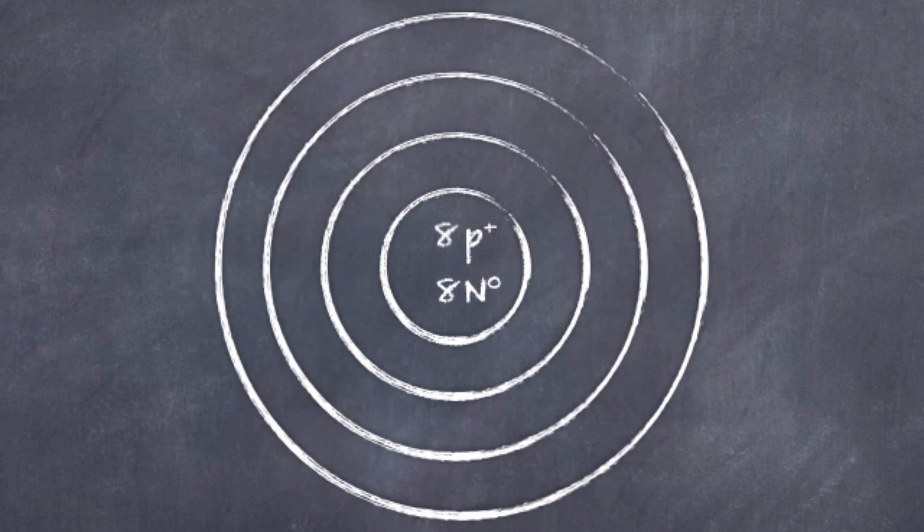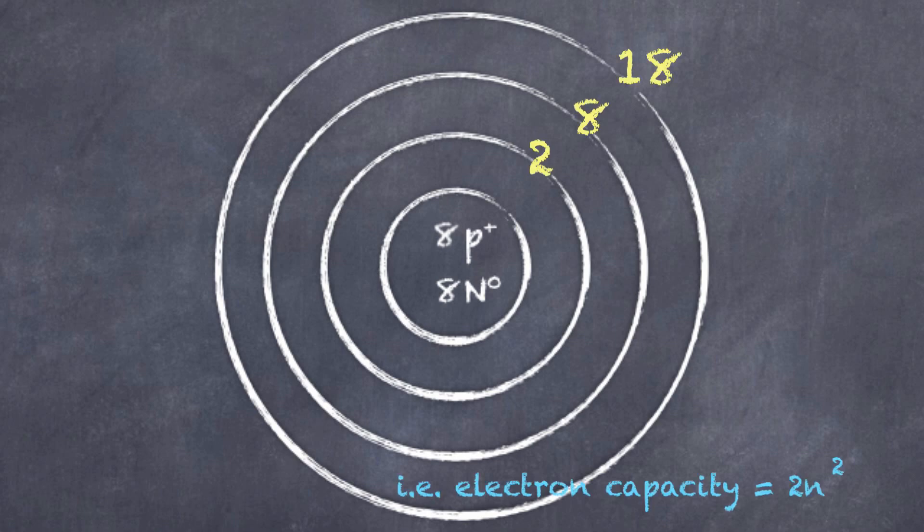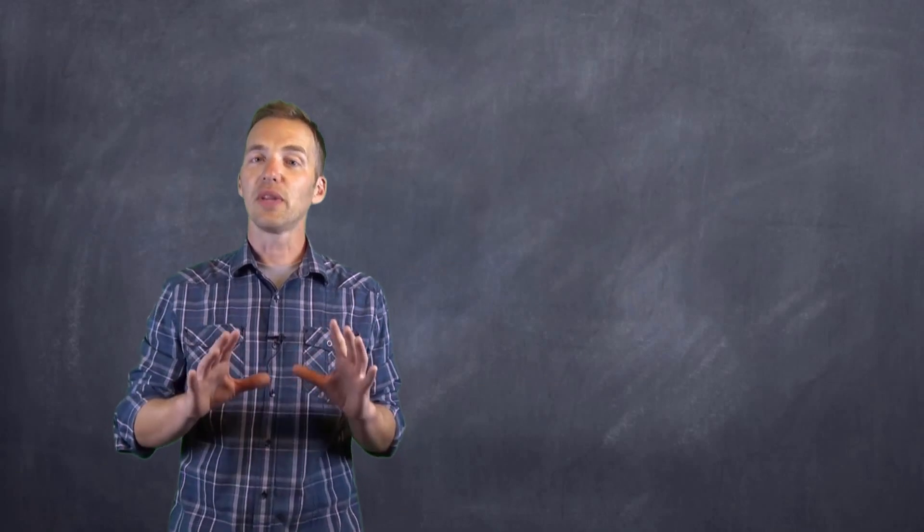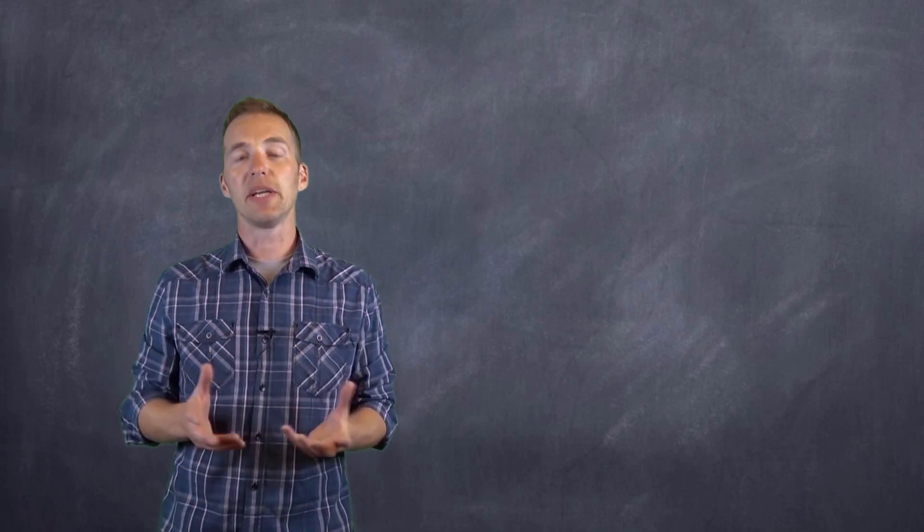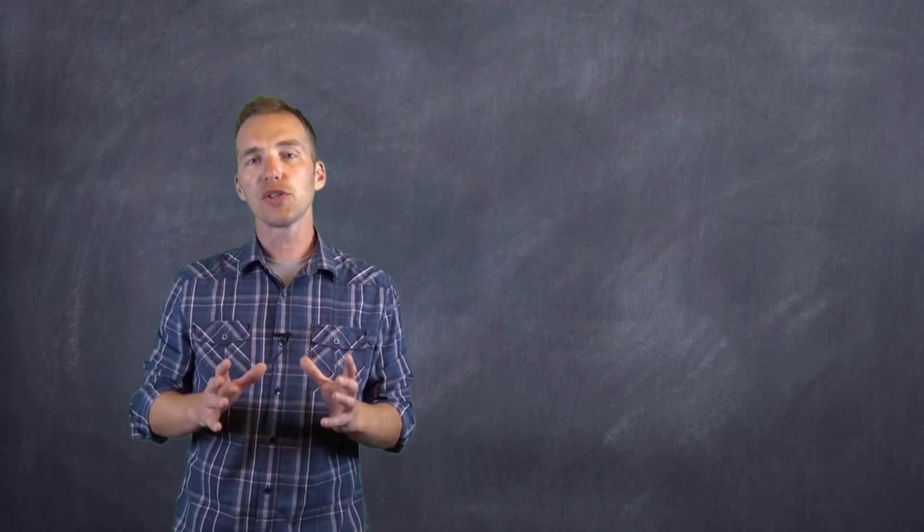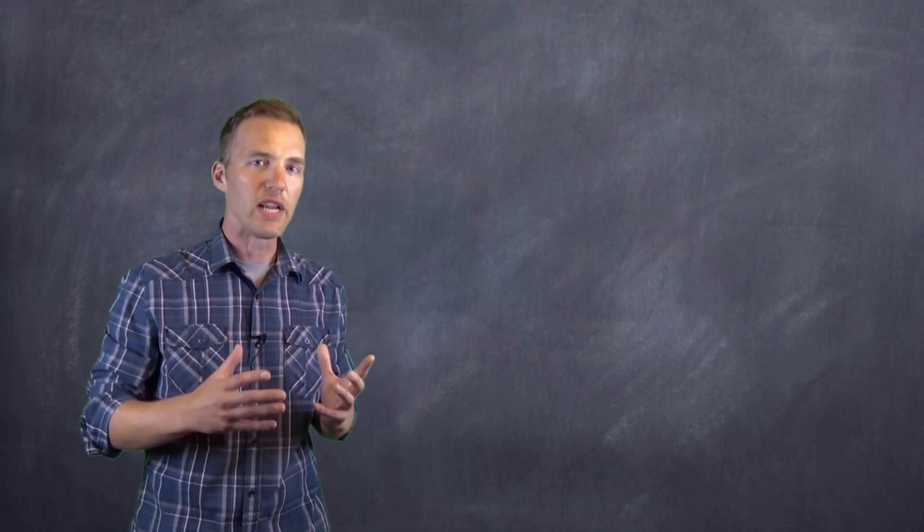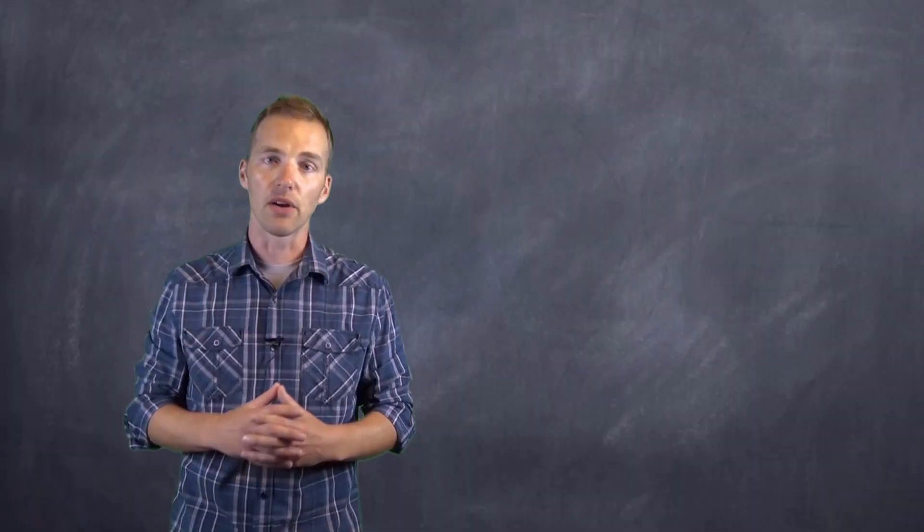Now you may have learned that there are certain numbers or maximum number of electrons that can go in these rings, and that is true. But I find the easiest way to construct these Bohr-Rutherford diagrams is to use this. That's right. Not only does the periodic table give us information about these elements, but it also helps us construct the arrangement of electrons in things such as a Bohr-Rutherford diagram.